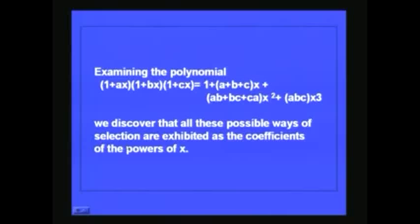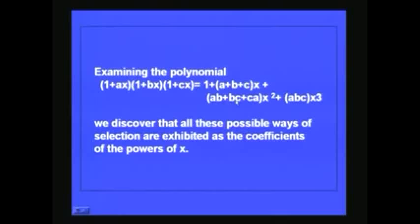Now if you look at this polynomial (1 + Ax)(1 + Bx)(1 + Cx), if you expand this it is equal to 1 + (A + B + C)x + (AB + BC + CA)x² + ABCx³. The coefficient of x represents the possible ways of choosing one object, and the coefficient of x² is AB + BC + CA, which represents the possible ways of choosing two objects out of the three objects A, B, C.